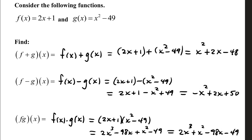f minus g of x: function f minus function g. 2x plus 1 minus x squared minus 49. Because this second function has more than one term, we have to distribute the minus sign. 2x plus 1 minus x squared plus 49. Combining like terms and writing in descending order, we have negative x squared plus 2x plus 50.